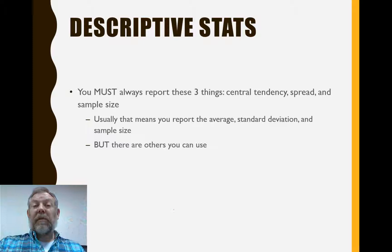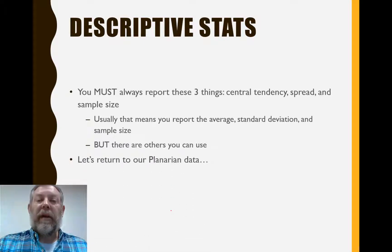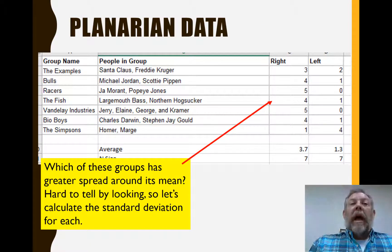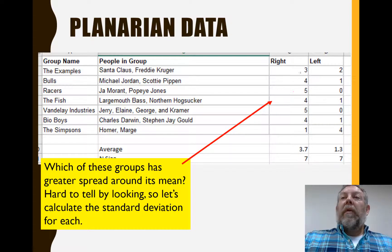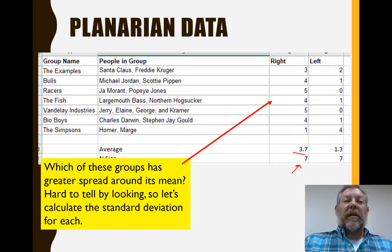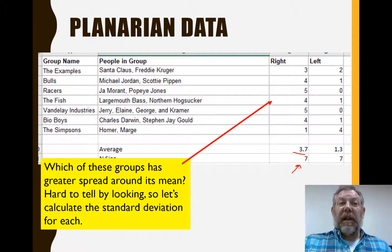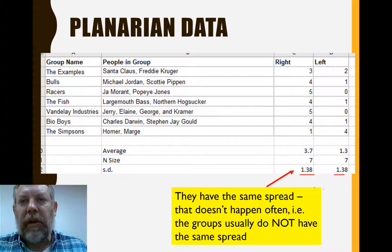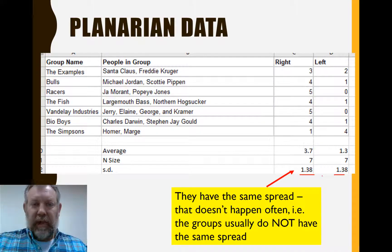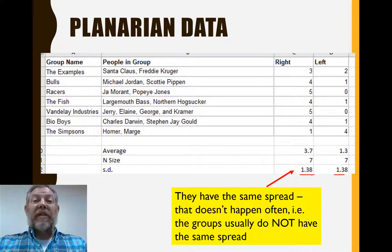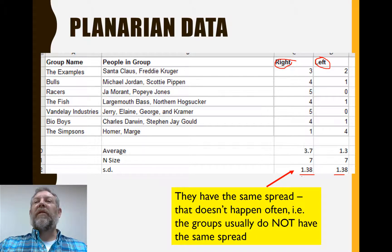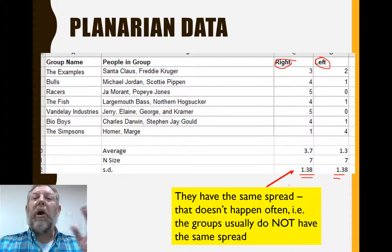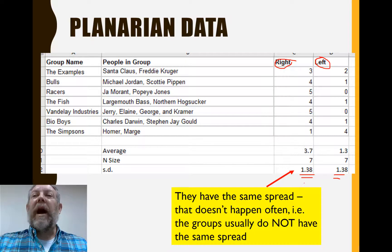Let's go back to our planarian data. Looking at these groups, we see the mean is greater than one, we've got the same n size in both, and we still need to measure the spread. When we calculate the standard deviation for each, we see it's actually equal for both groups — which is uncommon. This happens because the rolls to the right and left always sum to five for each group, so these values are linked and the spread is linked. In most of your other experiments, it would be very odd to see exactly the same standard deviation, but in this one it will always be the same value.